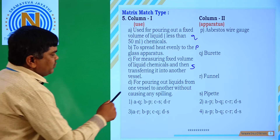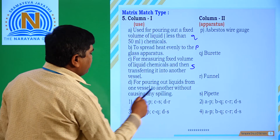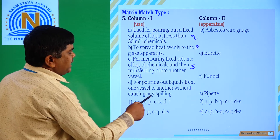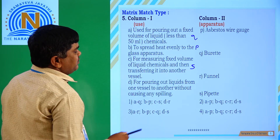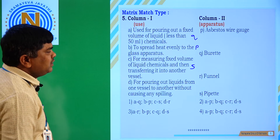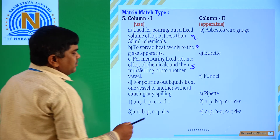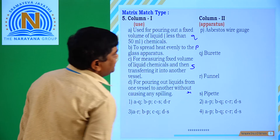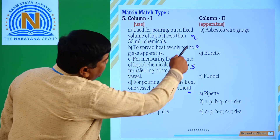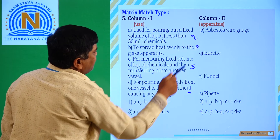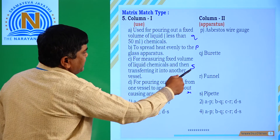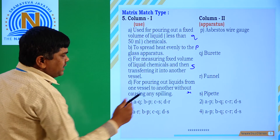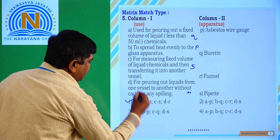Option D: for pouring out liquids from one vessel to another without causing any spilling — that is funnel, so option D matches R. To summarize: A-Q, B-P, C-S, D-R. Option 1 is correct.